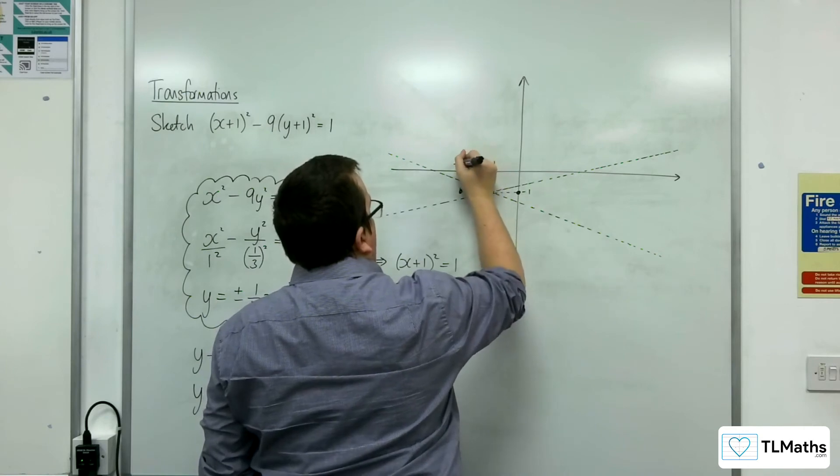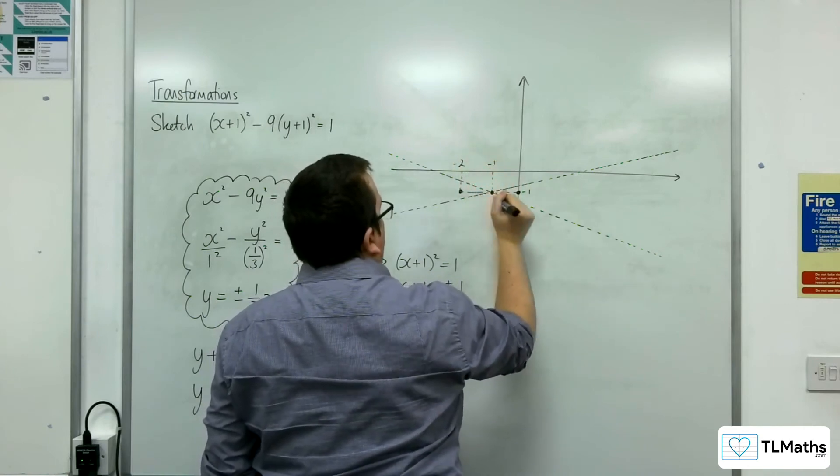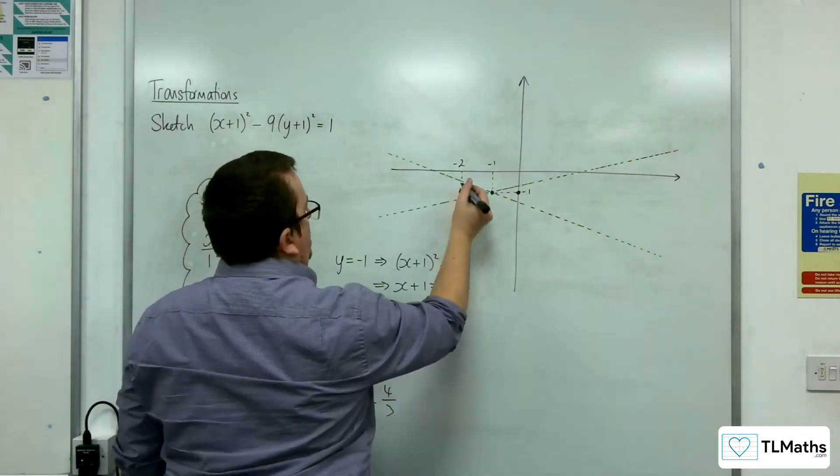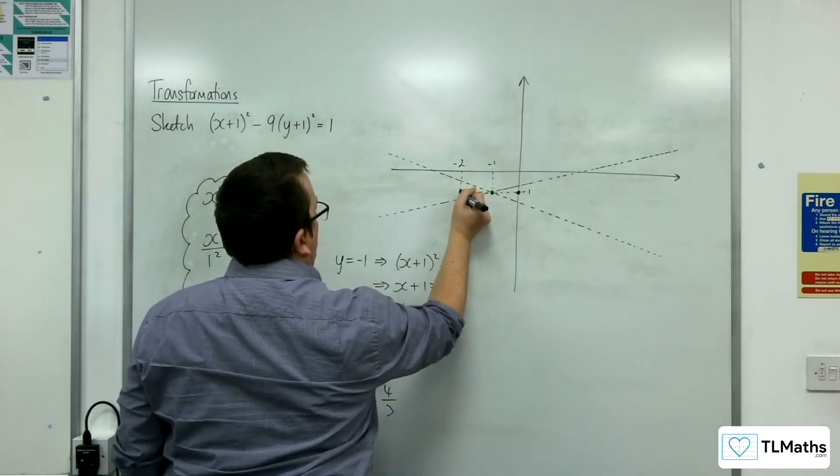So there and there, where that is at -2. And of course, that's at 0.